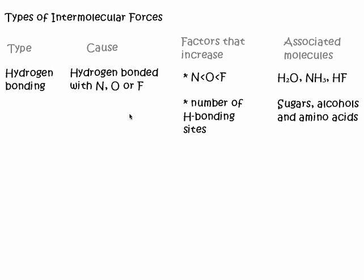So what can increase it? Well, fluorine being the most electronegative is going to be the highest whenever we have hydrogen and fluorine bonded together. Also, the number of hydrogen bonding sites on a molecule can also have a profound effect. Associated molecules, you can see here that we've got the three: water, ammonia, and hydrogen fluoride. But there are some others that are sitting out there that might not be as obvious.